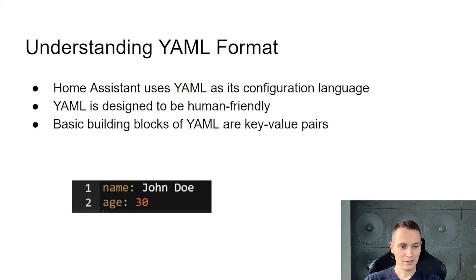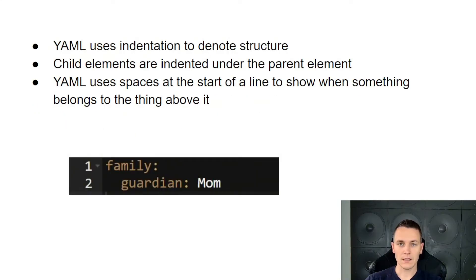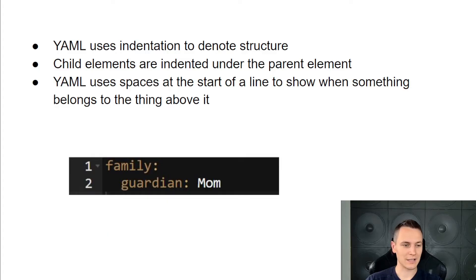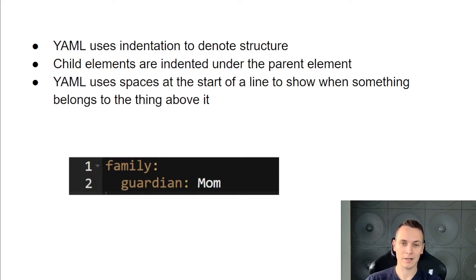Here we have created two attributes — name and age — which are the keys, and after the colon we specify the value. YAML uses indentation to denote structure; child elements are created under their parent element. YAML uses spaces at the start of lines to show when something belongs to the element above. In this example we have created a family parent element and a guardian child element with a value of 'mom', using two spaces to represent this relationship.